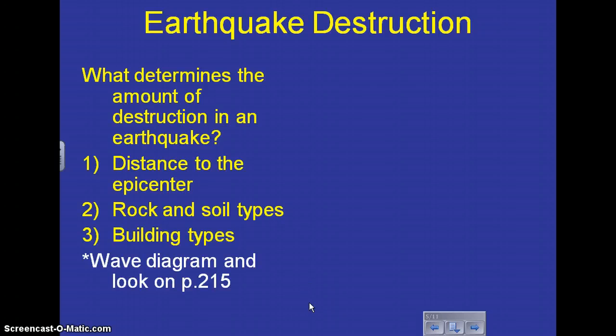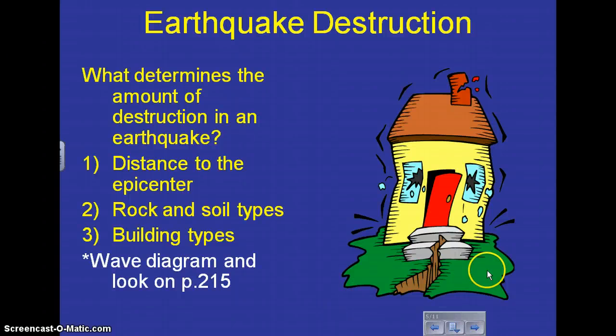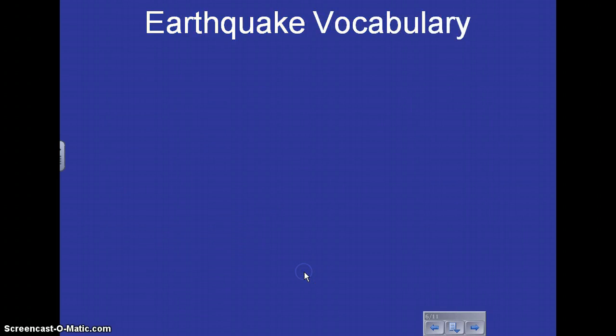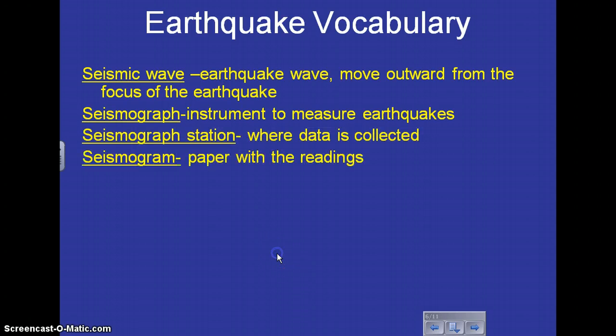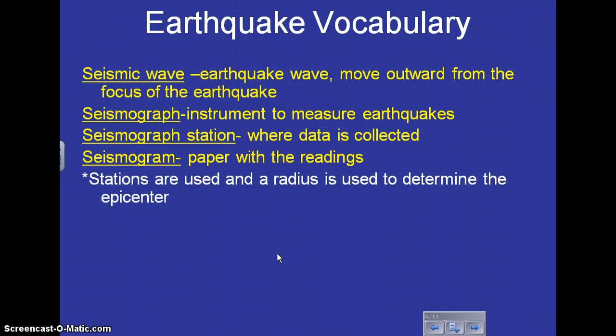I will be giving you a wave diagram later to look at for the parts of a wave. Here are some vocabulary words for this chapter that will be important for you. Usually, things with earthquakes start with the beginning of the word seismic, like seismic wave, seismograph, seismograph station, and seismogram.